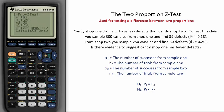We need to enter in the summary statistics for this problem. Candy Shop 1 claims to have less defects than Candy Shop 2. To test this claim, you sample 300 candies from Shop 1 and find 39 defects.